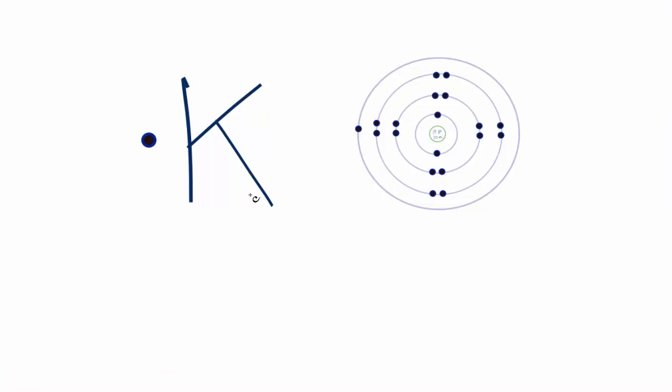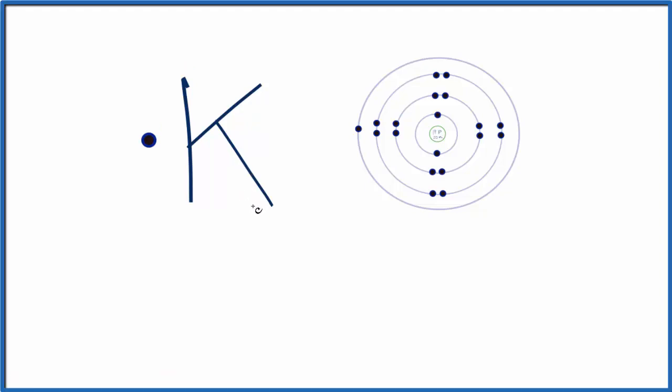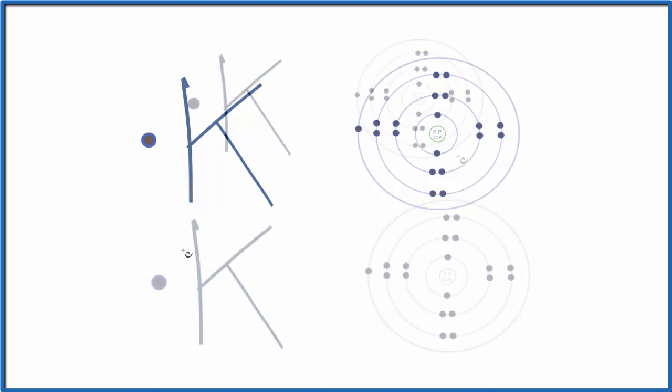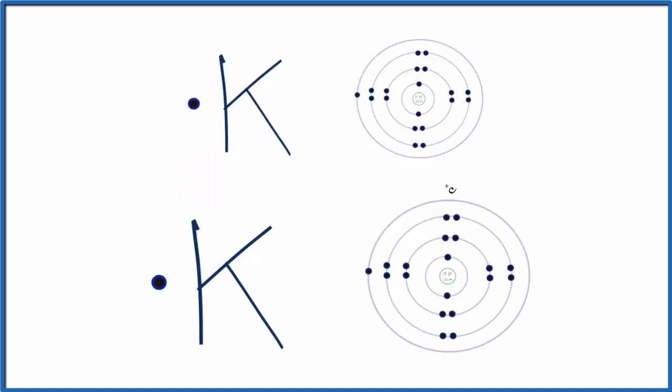So if we want to make this K+, we're actually going to lose this electron, because when we lose a negative charge, that makes us more positive. So let's do the Lewis structure for K+. To make this potassium into K+, we get rid of the electron, just the one here in the highest energy level.